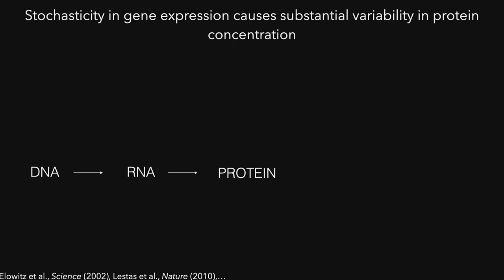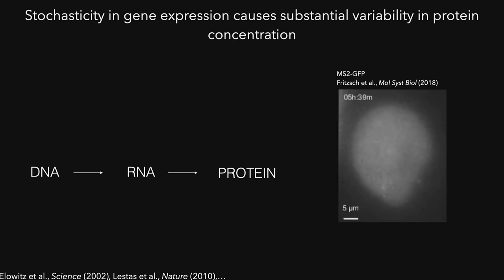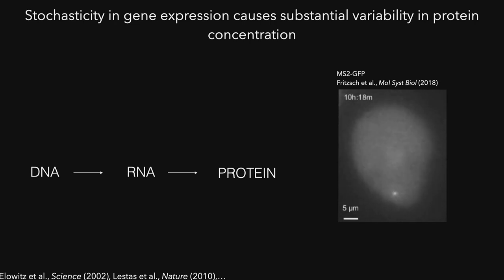Stochasticity in chemical reactions can lead to very large fluctuations in cellular responses. The textbook example of this is gene expression, where random events in both transcription and translation can lead to very large fluctuations in gene expression output. We can see this nicely if you look at transcription inside living cells, where you can see mRNA transcripts being made at the gene locus. You can appreciate this very pulsatile and bursty behavior of transcription, where pulses of transcriptional activity are followed by long silent periods.